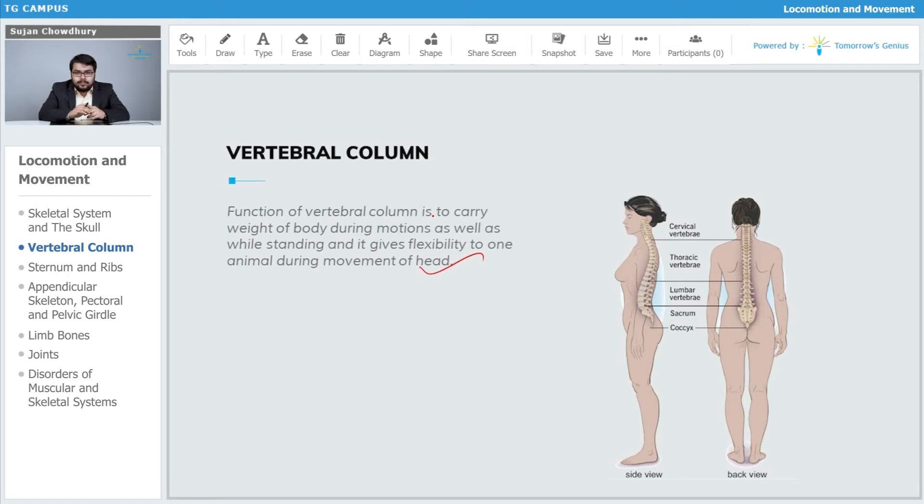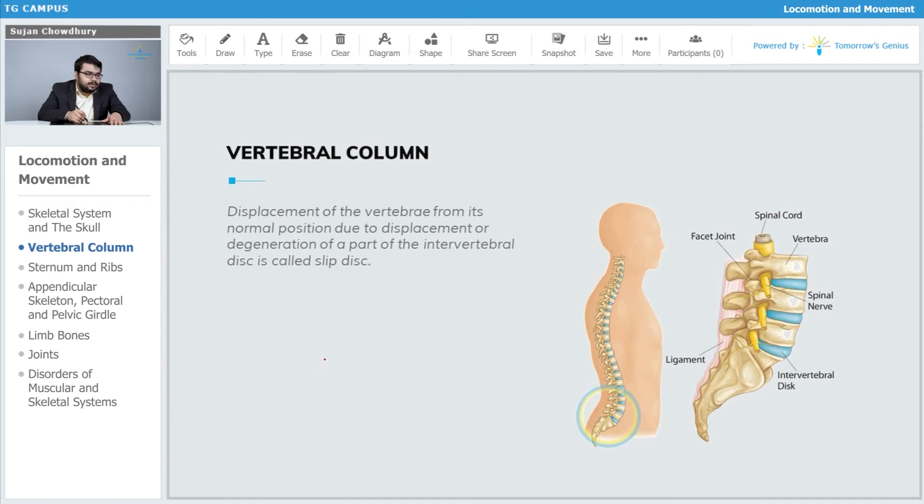The displacement of the vertebrae from its normal position due to displacement or degeneration of a part of the intervertebral disc is called slip disc.